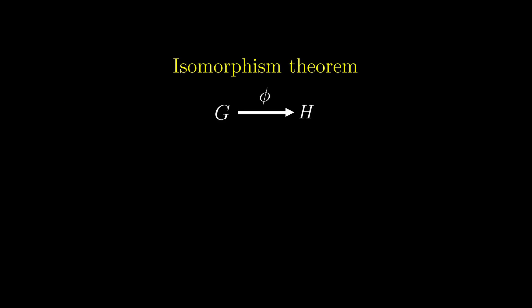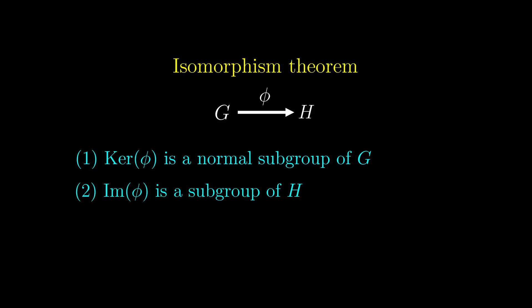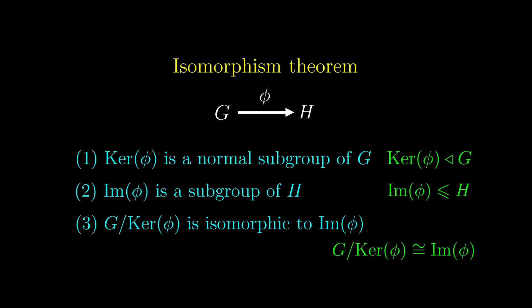The isomorphism theorem states three things. Firstly, the kernel is a normal subgroup of G. Secondly, we have the image to be a subgroup of H. Lastly, since kernel is a normal subgroup of G, we can define the quotient group. And this quotient group is isomorphic to the image. Mathematicians like to use symbols to denote all these concepts listed on the right here.